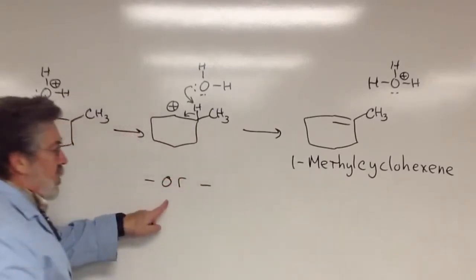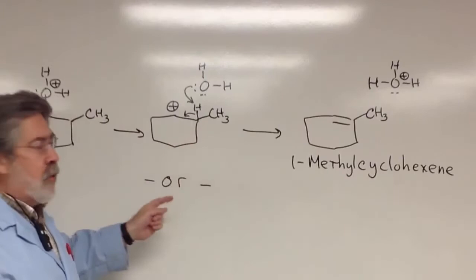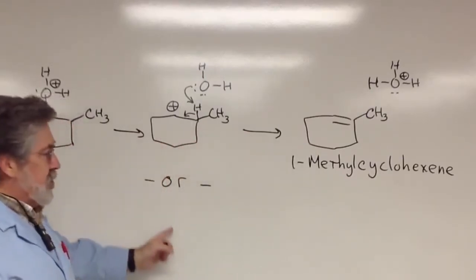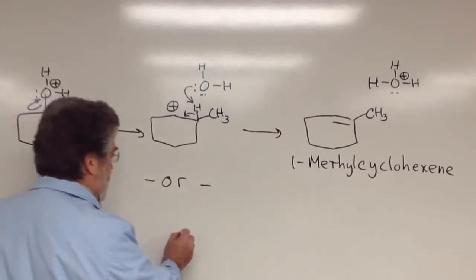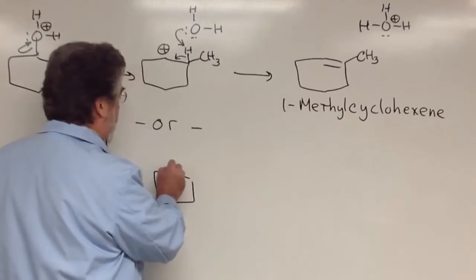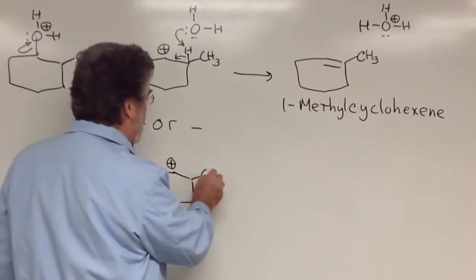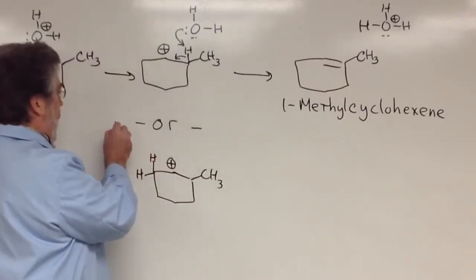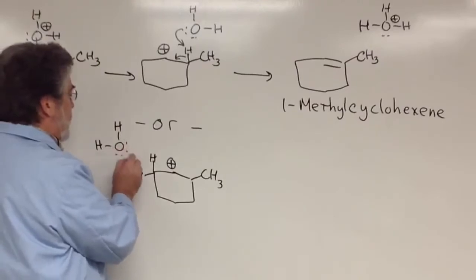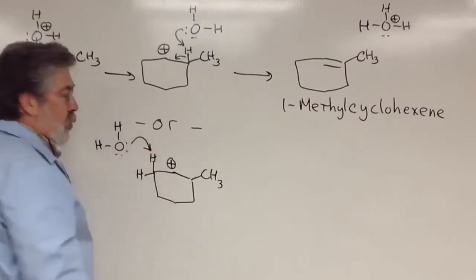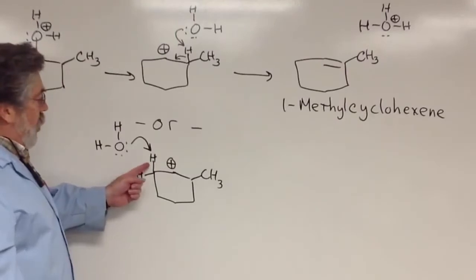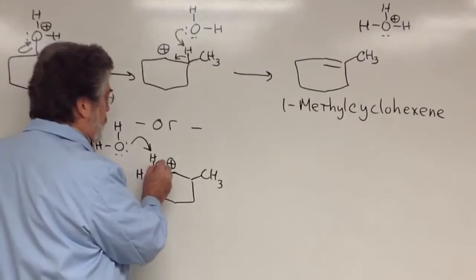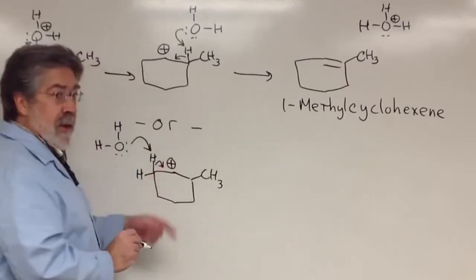Now, I'm saying or, because obviously one molecule cannot do both. The molecule will either lose a proton and go this way or lose a different proton and go to a different product. And so, here is the carbocation intermediate. There are two protons on the adjacent carbon. Again, I need water to act as the base to remove a proton from here. And as before, the electrons of this bond fall down toward the carbocation to put in a double bond and generate an alkene.